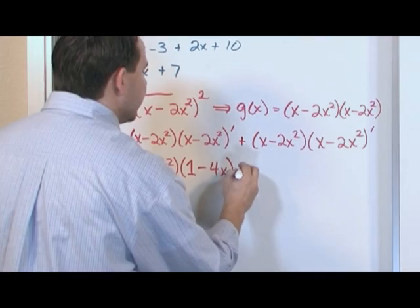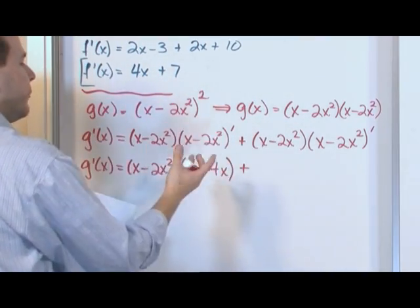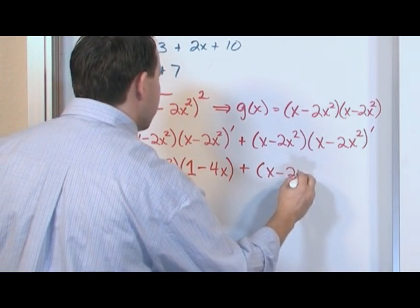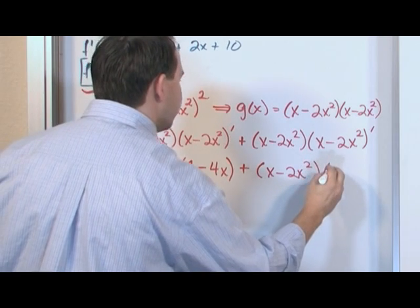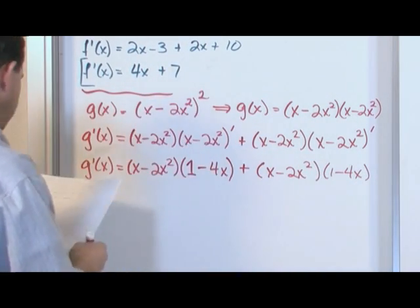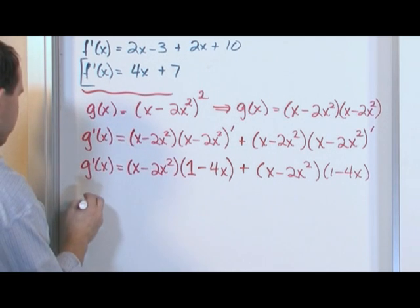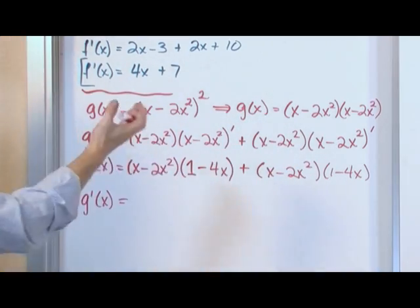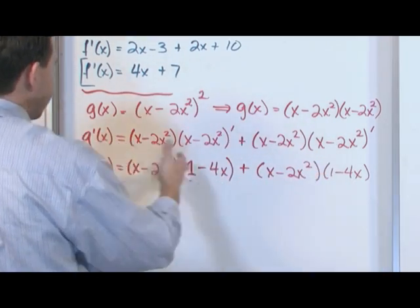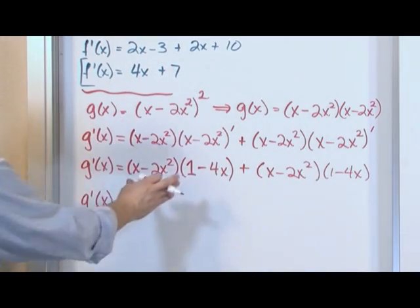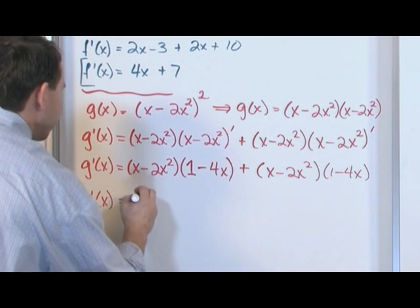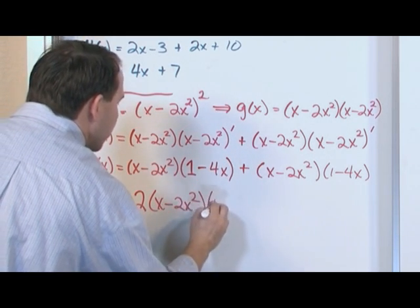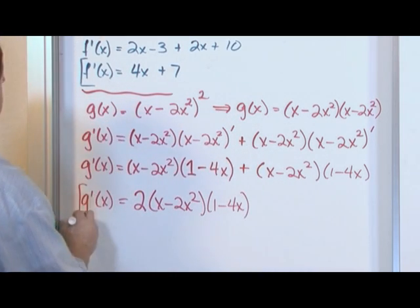Notice that these two terms, because of the structure of this problem, are exactly the same. So I'm going to get the same thing for both: x minus 2x squared times 1 minus 4x, plus x minus 2x squared times 1 minus 4x. Since I see that these terms are duplicated, I'm just going to factor out a 2 and write: 2 times x minus 2x squared times 1 minus 4x. And that is the correct answer.